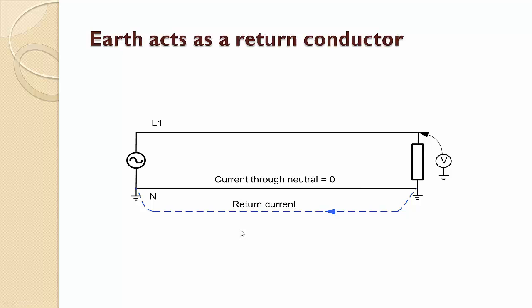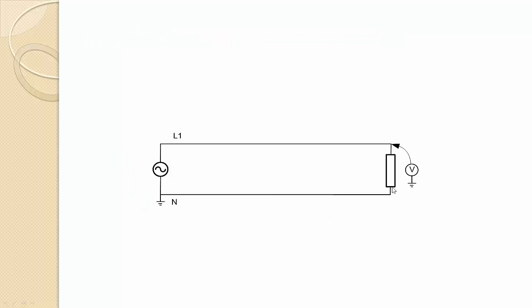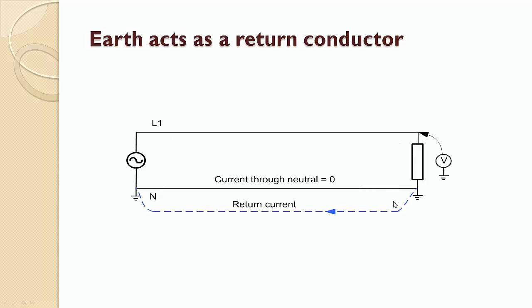Second aspect is, the earth can act as a return conductor. For example, see here this circuit. What I have done is, actually I have earthed the load end also. Before I hadn't earthed there. So in this case I have earthed the load end. So what will happen? The line current will flow through this line and what about the neutral or the return current?